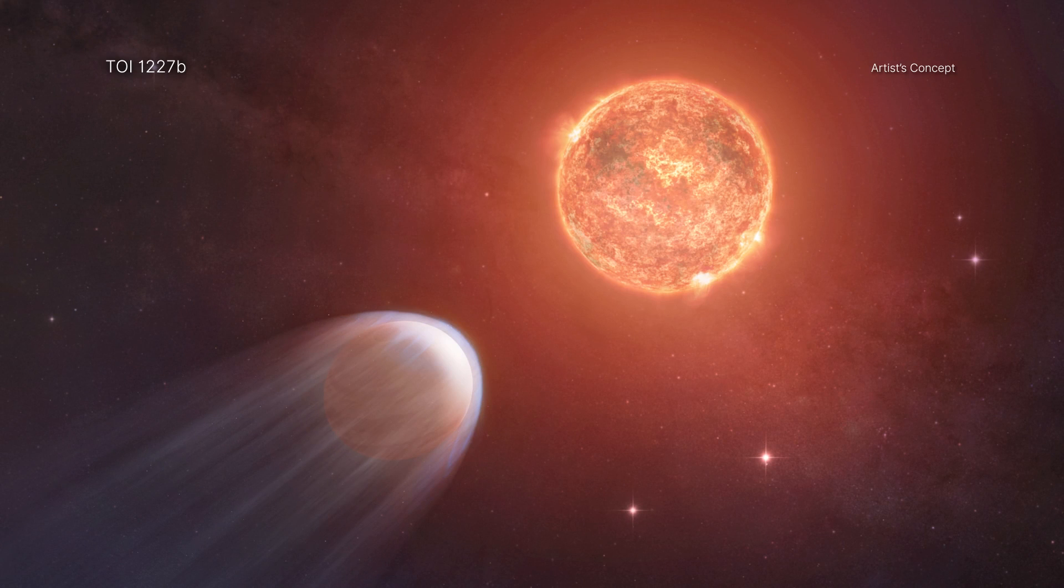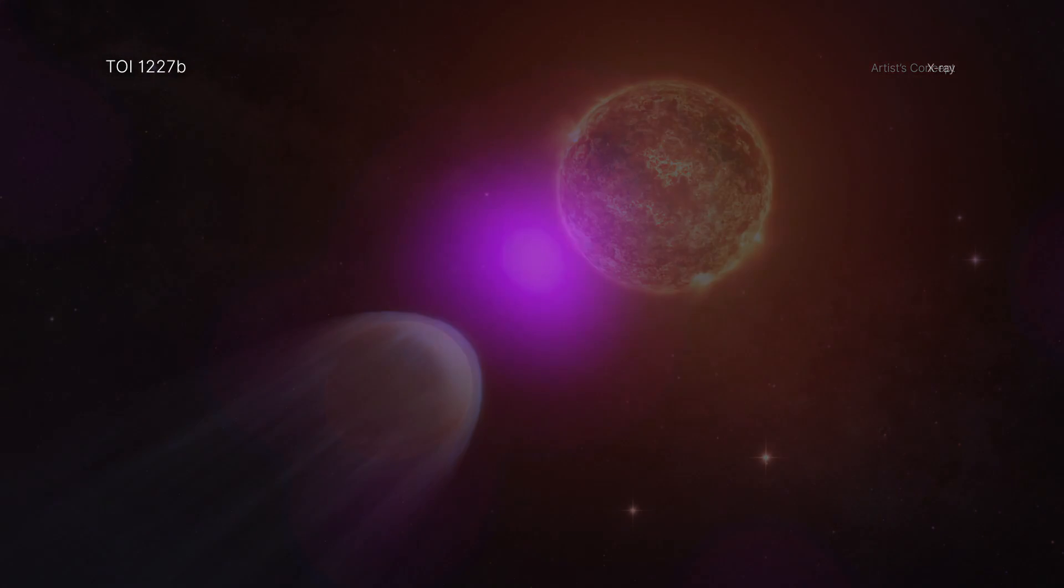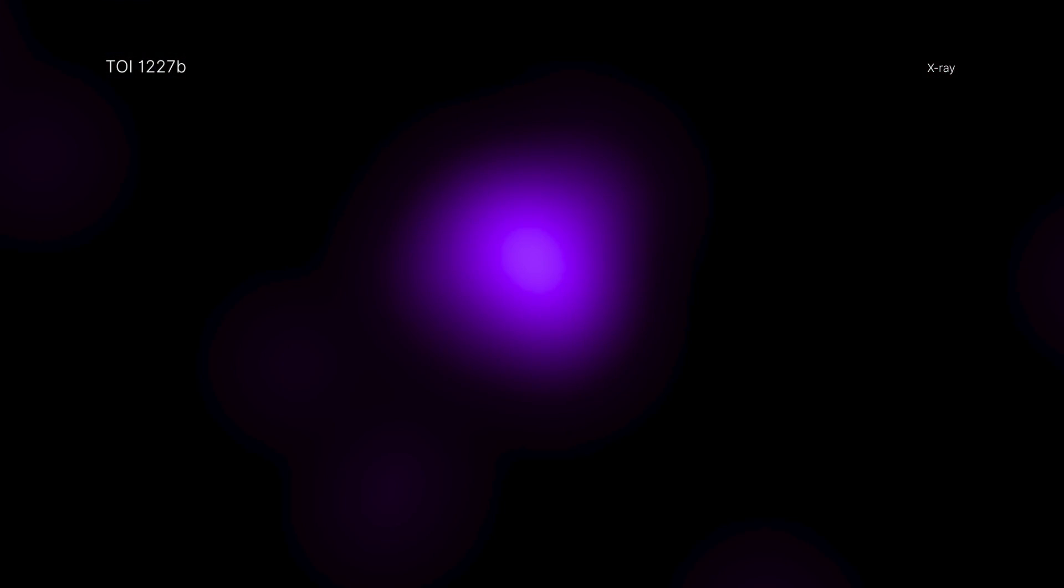The star that hosts TOI-1227b, which is called TOI-1227, is only about a tenth the mass of the Sun and is much cooler and fainter in optical light. In X-rays, however, TOI-1227 is brighter than the Sun and is subjecting this planet, in its very close orbit, to a withering assault.